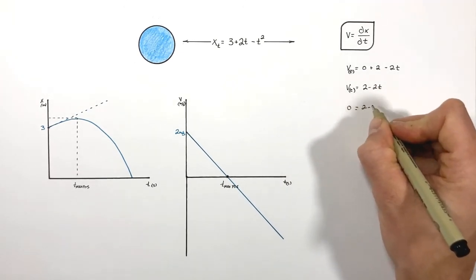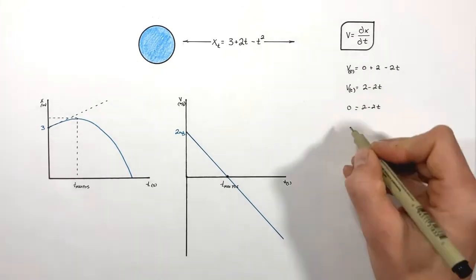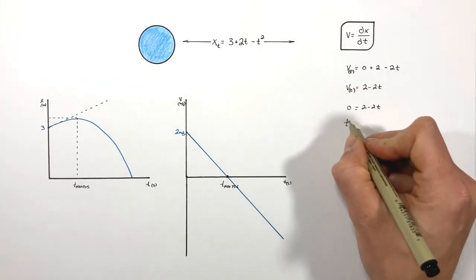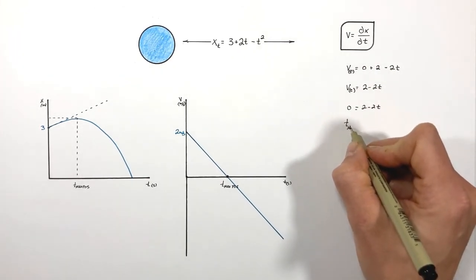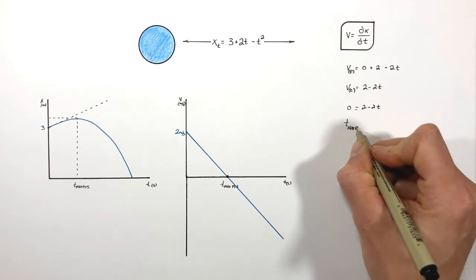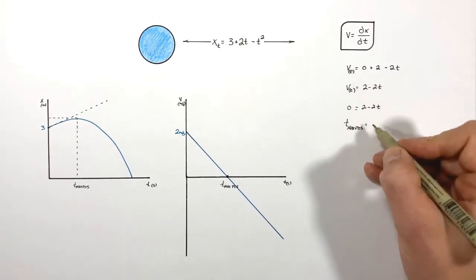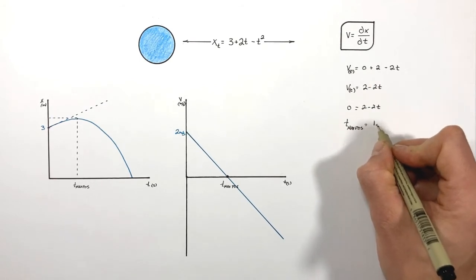Setting 0 equal to 2 minus 2t, we can solve for t. Remember that's going to be the time of the maximum position, and our time of maximum position is going to be 1 second.